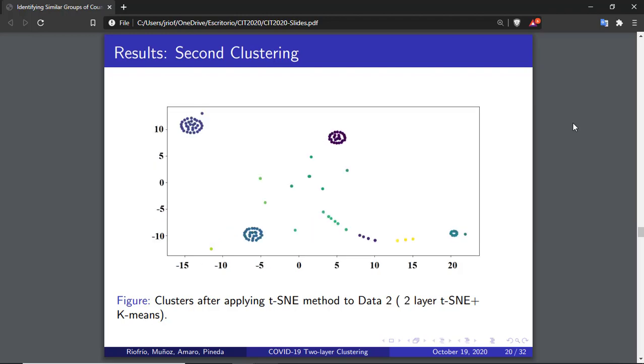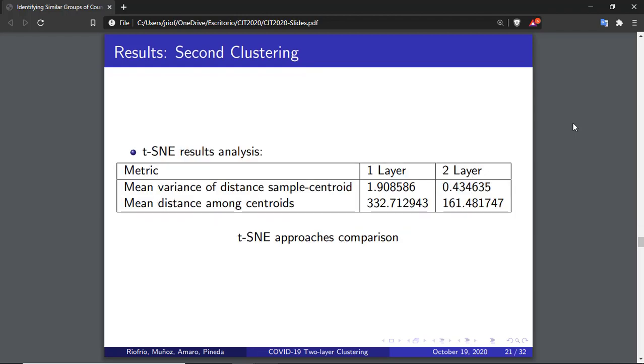While with the proposed method of a two layer clustering using t-SNE and k-means over data2, the groups are separated in a better way. It is easier to visualize the clusters. Some samples are already grouped together, making it easier for k-means to cluster the samples into groups. This can be shown in the following table. We compute the mean variance of the distance from the centroid of the cluster to each sample within the cluster, and the average distance among all the centroids in each approach. A smaller variance is preferred, while a greater distance among the centroids is desired. The proposed method using t-SNE shows groups with their samples closer together, but the distance among the centroids is smaller, that is, the groups are closer together.